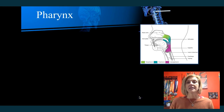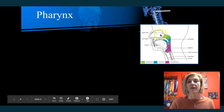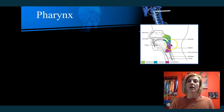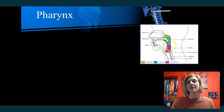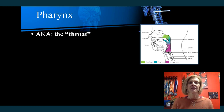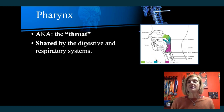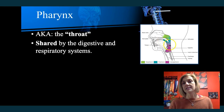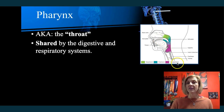The pharynx is your throat. It has three regions: the nasopharynx up in the nose area, the oropharynx down in the tongue area, and then the laryngopharynx, which is what we typically think of as the throat. The pharynx is shared by both the digestive and the respiratory systems. You have an opening that connects both your nose and your mouth — food you eat follows through the esophagus, and the air you breathe follows through to the trachea.